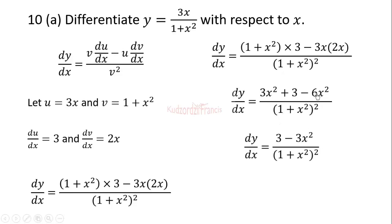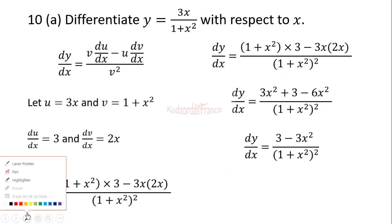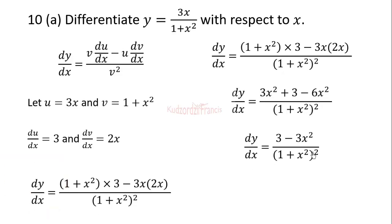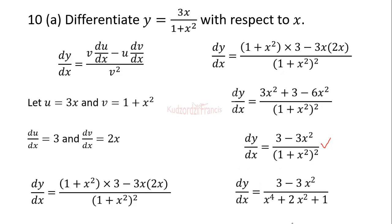Simplifying: 3x squared minus 6x squared gives negative 3x squared, leaving us with 3 minus 3x squared in the numerator. We can leave the answer in this form, or expand the denominator for the final answer.